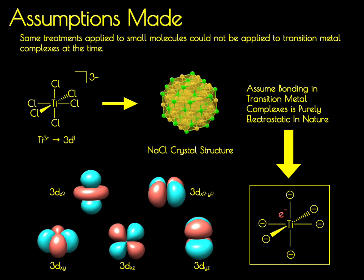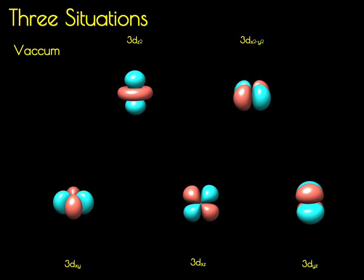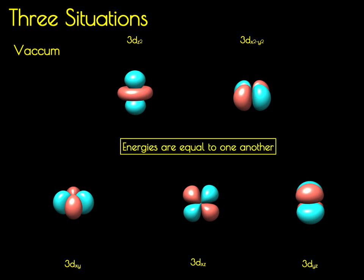What we're now going to do is consider how these d orbitals behave in three different situations. The first situation is if these d orbitals are in a vacuum, so they're not being exposed to any external field. In a vacuum, all of these d orbitals will have the same energy — they'll be five-fold degenerate, so there's going to be no influence on the relative energy of one orbital relative to the other.